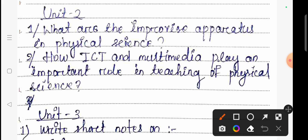Unit 2 is an important question. What are the improvised apparatus in physical science? This is an important question. How can you build costly, complicated apparatus?